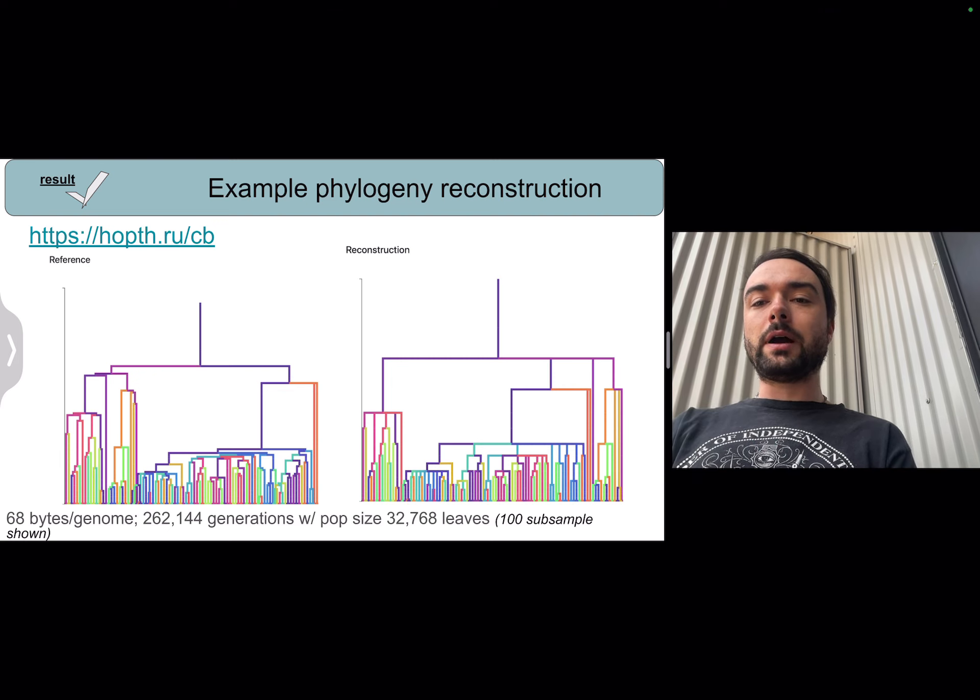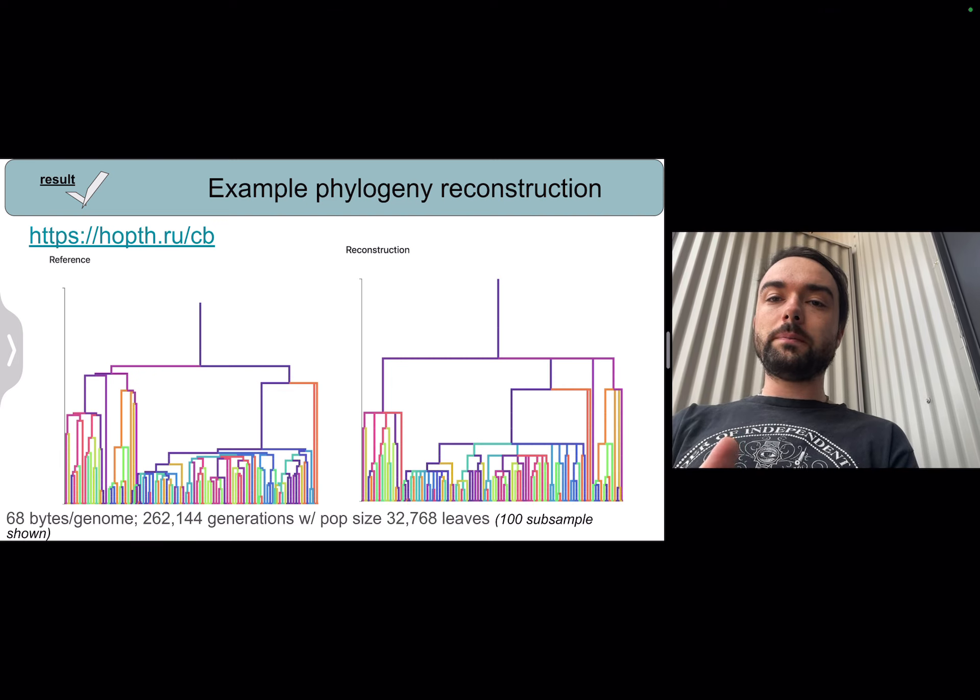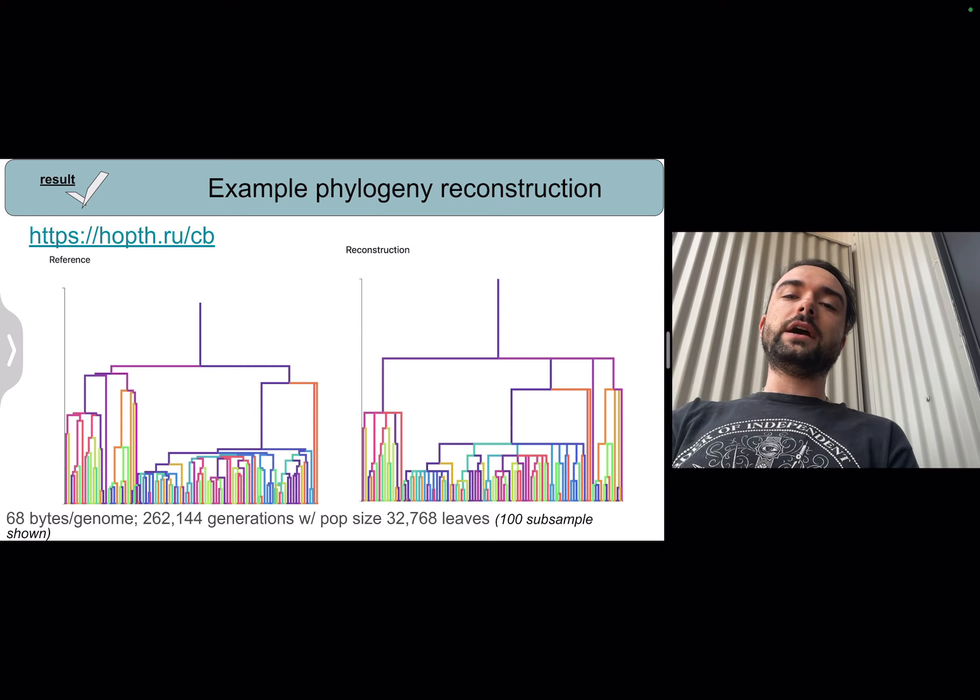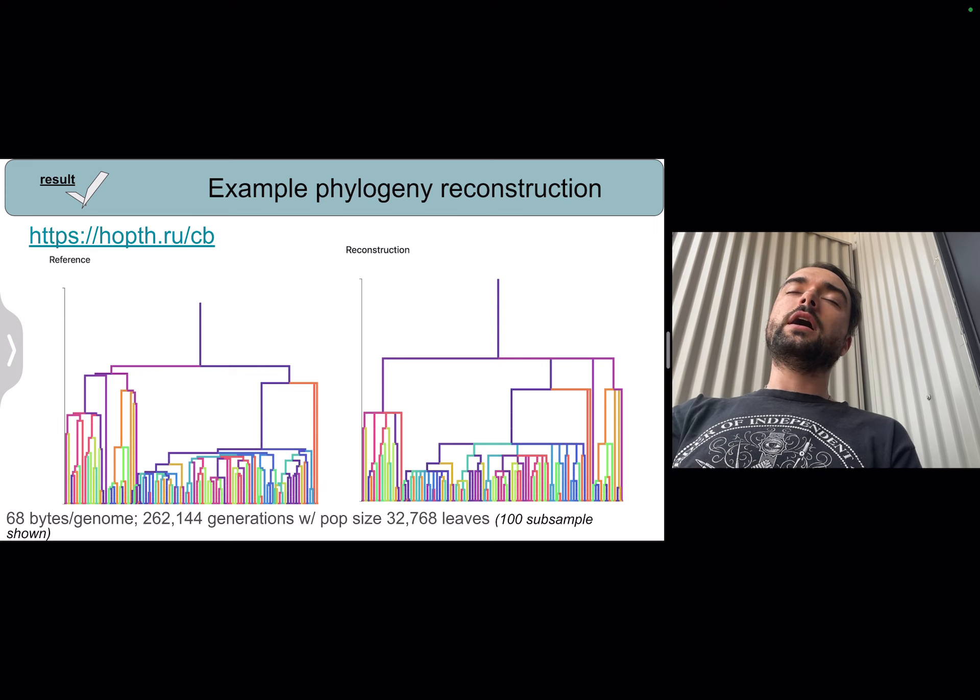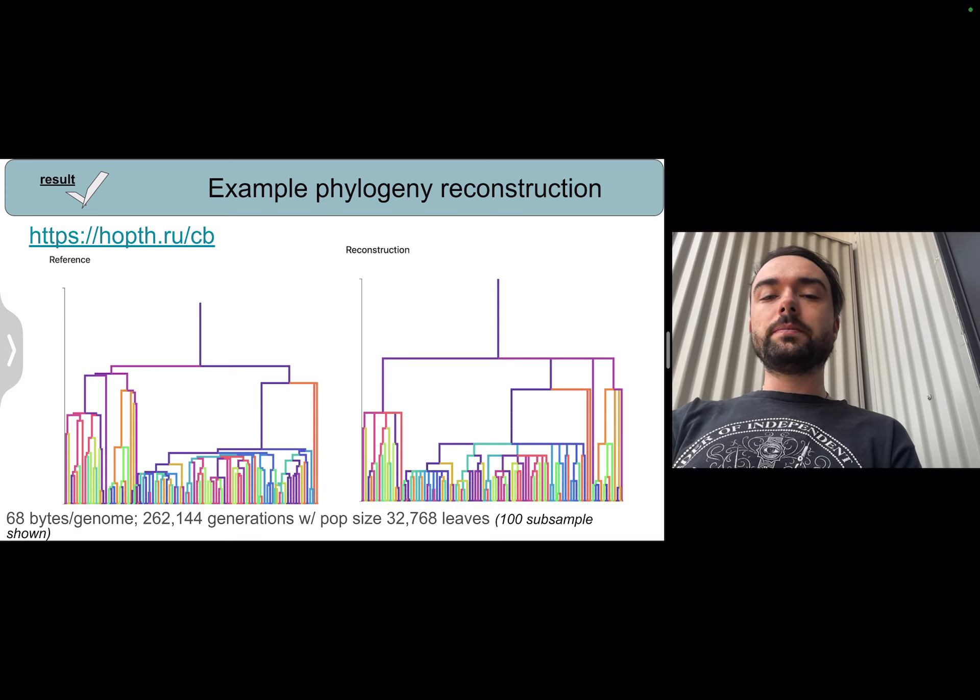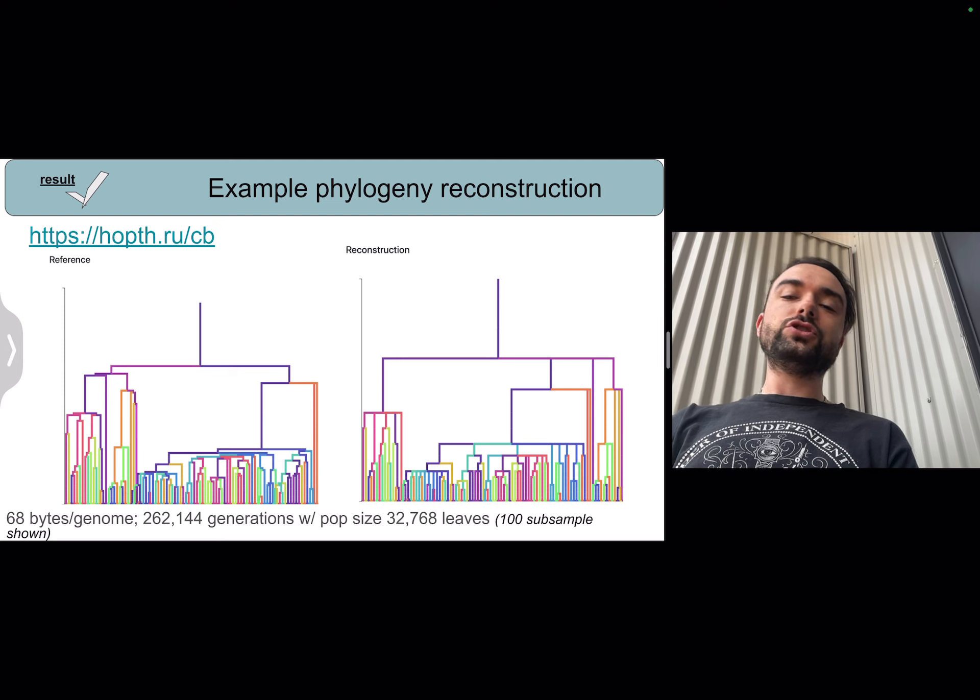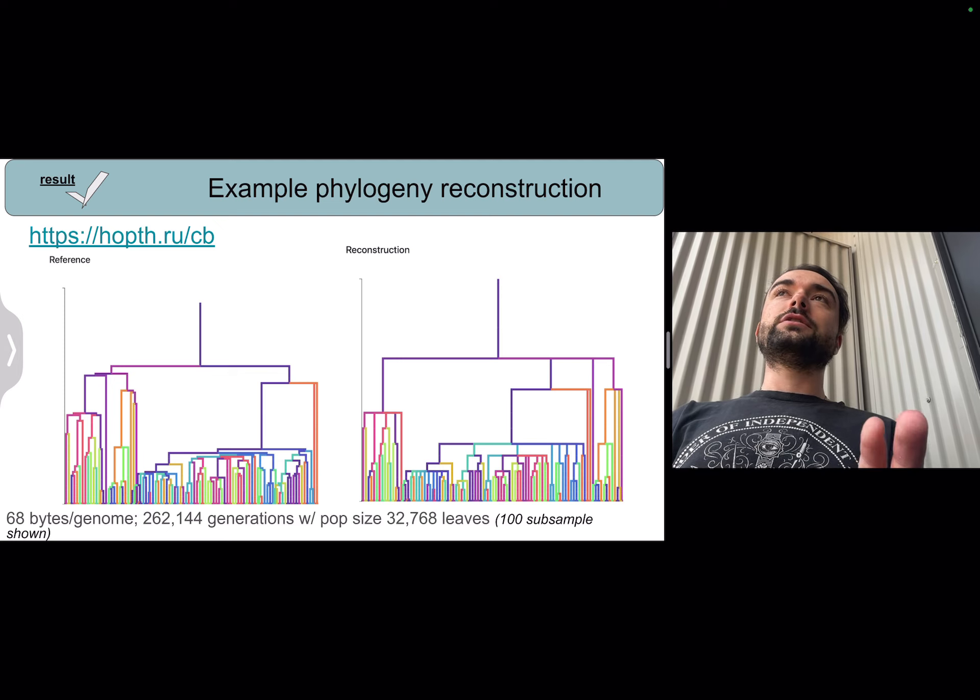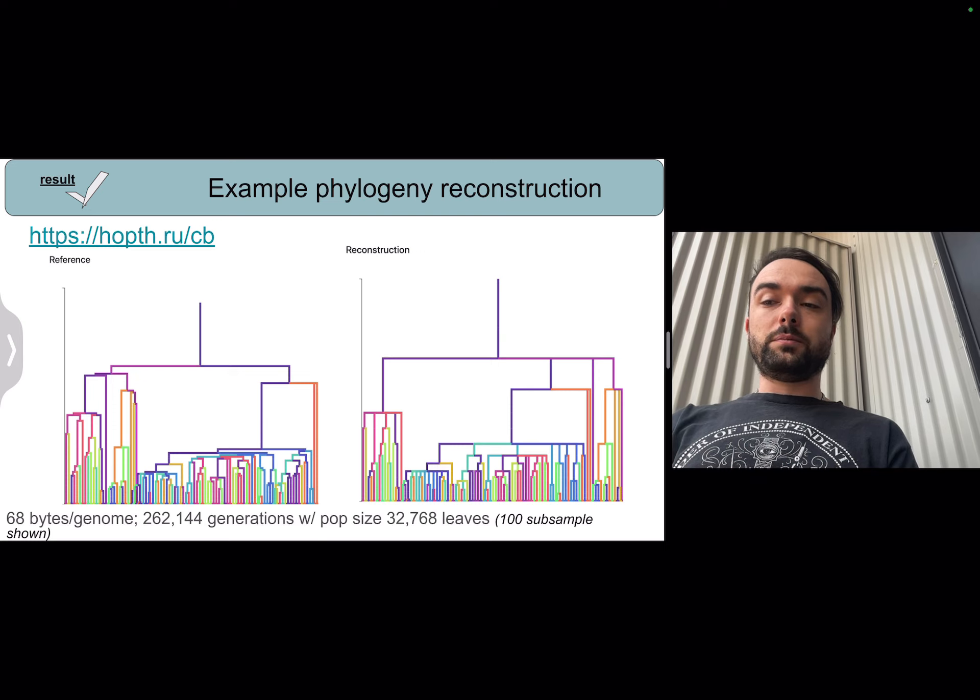Here's an example of reconstruction from an asexual population that we were able to perform using this hereditary stratigraphy methodology. On the left is the perfectly tracked phylogenetic. On the right is the reconstruction. For this experiment, we ran 250,000 generations with population size of about 30,000.